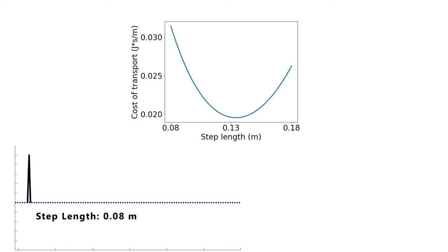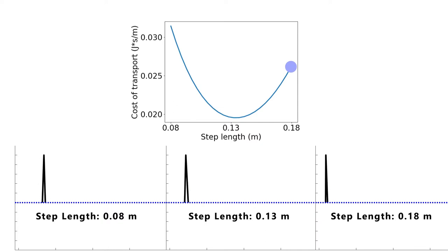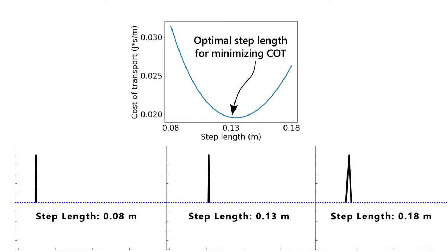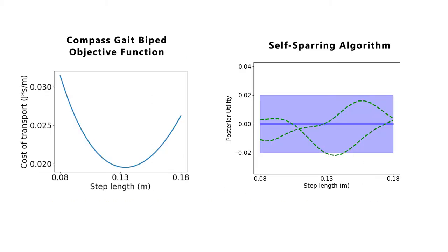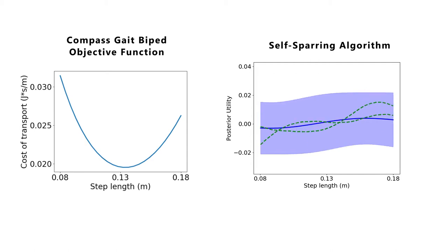This work is motivated with the compass gait biped. Under this model, gaits with different step lengths have varying mechanical costs of transport. Preference-based learning can be applied to find the step length with the optimal cost of transport using only pairwise preferences. The self-sparring algorithm begins with a uniform prior over the utility of each step length and samples two points from this prior. It is told which of these two points has a lower cost of transport and uses this information to update the model posterior.